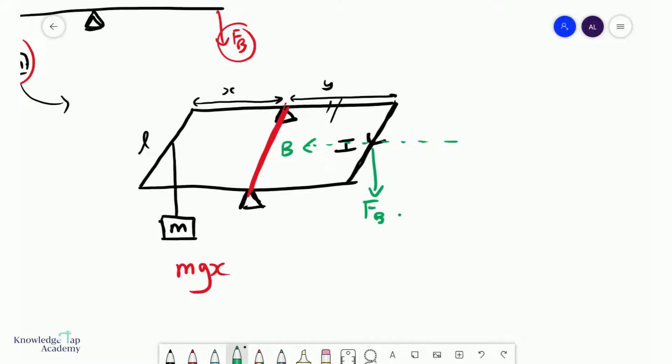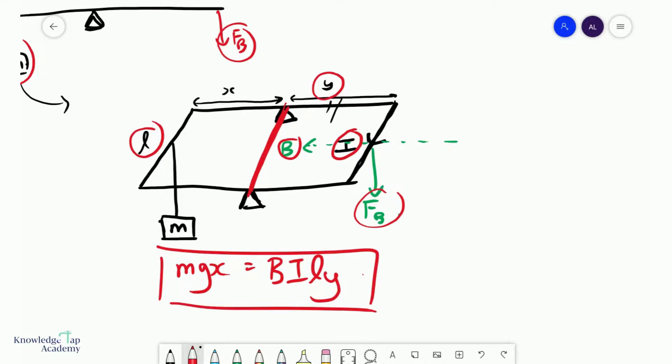which could potentially provide a counter moment to Mgx. And so we simply equate Mgx now to the moment created by Fb, and that, of course, will be Bil, multiplied by the perpendicular distance to the pivot, Bil Y. And so if the current balance remains horizontal, then this must be true.